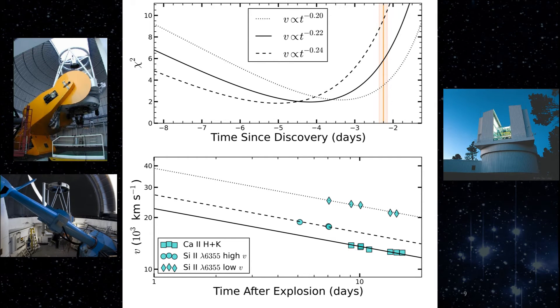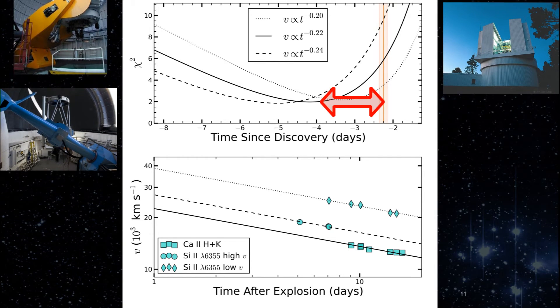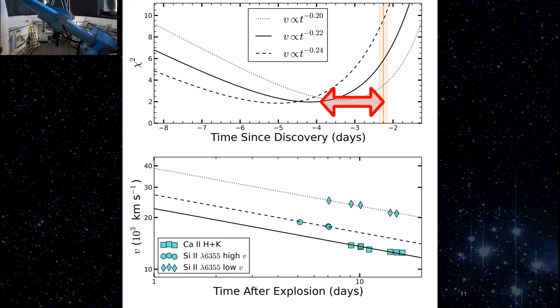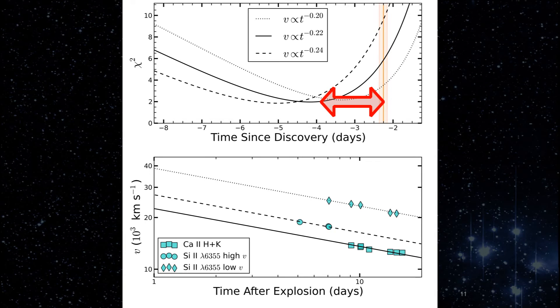The explosion time we found by this method is about two days earlier than the time of first light we determined by fitting the early-time light curves. This discrepancy points to a possible dark time between when the supernova exploded and when it began to brighten at optical wavelengths.